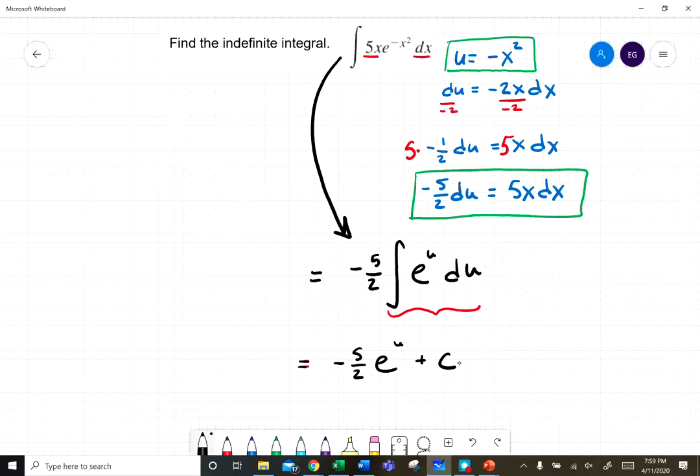And let's back substitute: u equals negative x squared, so we have negative 5/2 e to the negative x squared. And don't forget your constant of integration.